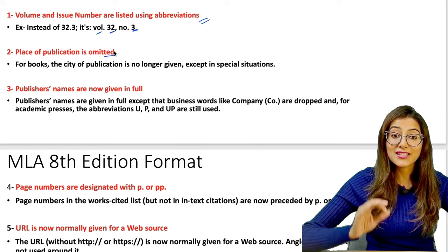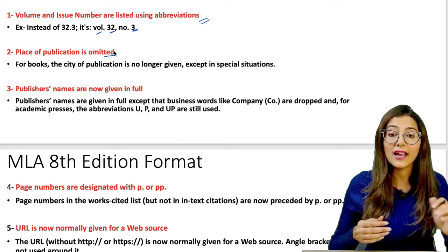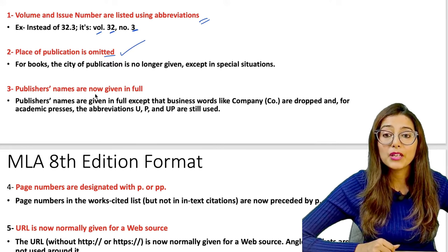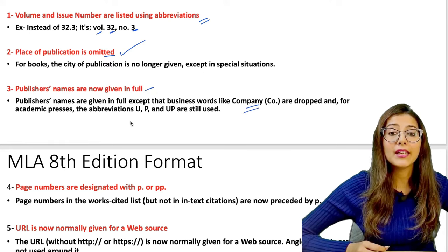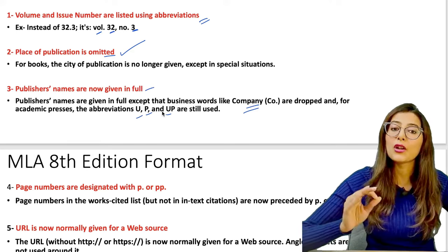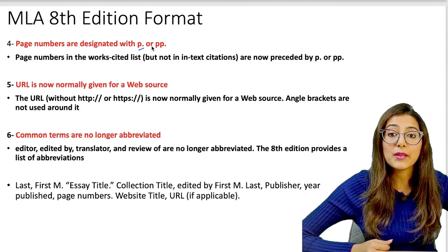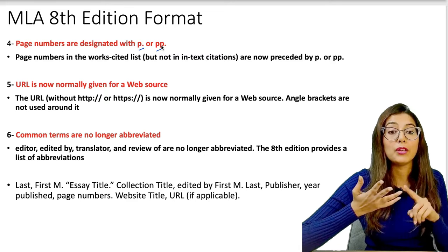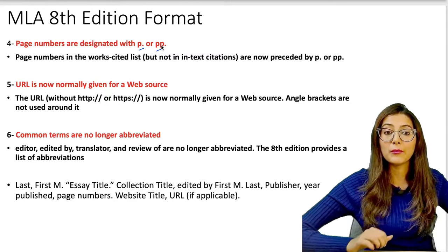Place of publication is omitted in the 8th edition — it was present in the 7th edition but has been removed. Publisher's names are now given in full, though abbreviations like U, P, or UP are used for University and Press. Page numbers are designated as P or PP. So remember: VOL and NO abbreviations are used for volume and number; P and PP for page numbers; publisher's name in full using U and P; and place of publication is removed.